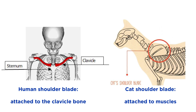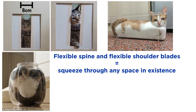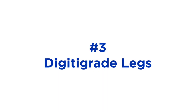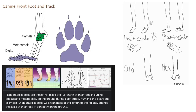Cat's shoulder blades are not anchored to the sternum or the clavicle, like human shoulder blades and collarbones are. This allows cats to have a wider range of motion and allows them to squeeze through tight spaces easily.